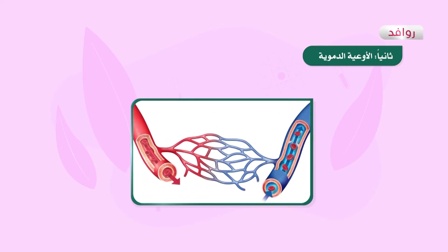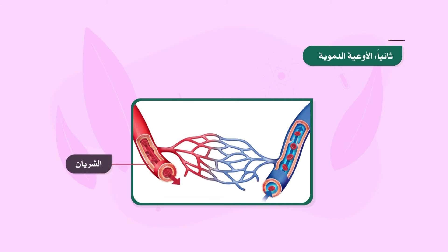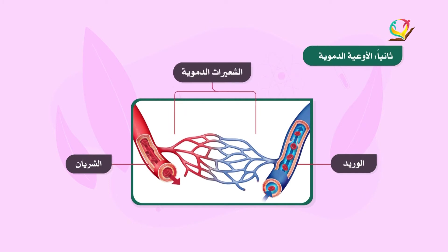ننتقل الآن إلى الأوعية الدموية، وهي العضو الثاني من أعضاء الجهاز الدوراني. هناك ثلاثة أنواع منها في جسم الإنسان: الشرايين التي تظهر باللون الأحمر، والأوردة التي تظهر باللون الأزرق، وتصل بينهما الشعيرات الدموية.